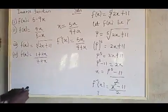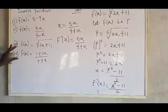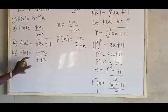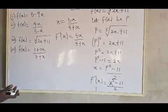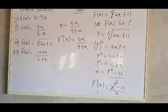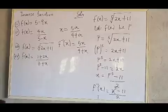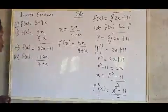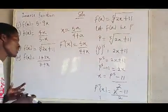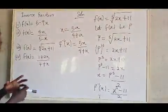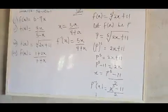The last question — F of X equals one plus two X over seven plus X — I'll leave that for you to do and submit your answer in the comment section. There will be a gift for the first person to do that. Thank you very much, see you in the next class.